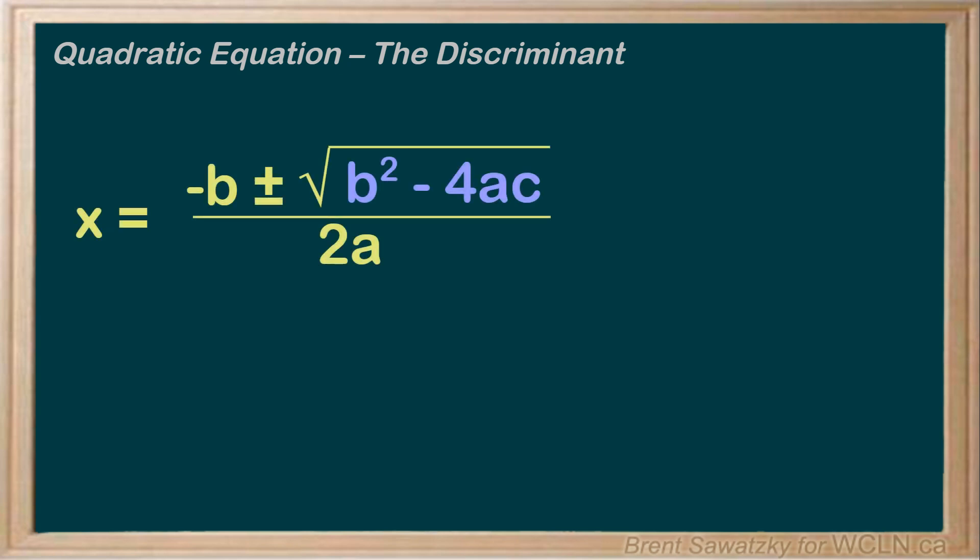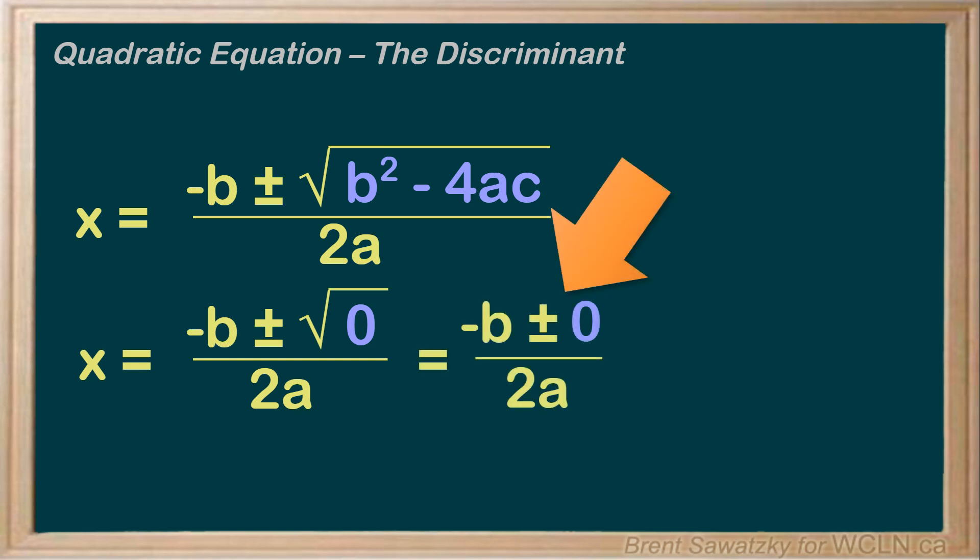Second scenario, what if the discriminant came out to be 0? What happens when you add 0 to a number? Nothing. There's no change, right? Then what happens when you subtract 0 from a number? Again, no change, still the same number.